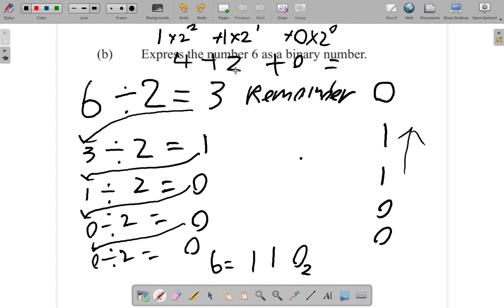So 4 plus 2 is 6, plus 0 is 6. So we see that we get 6, so it does work out. The answer is really 110 as a base 2 number. Let me just clean up here. So this is the working we have, and the answer is 110.